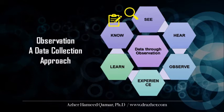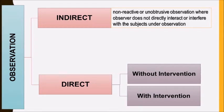Generally speaking, there are two major types of observation: indirect observation and direct observation. Indirect observation is more about non-reactive or unobtrusive observation where the observer does not directly interact or interfere with the subjects under observation. For example, standing at a traffic signal and watching traffic regulations being followed, or watching a documentary, may also be an indirect observation if you tend to do so.